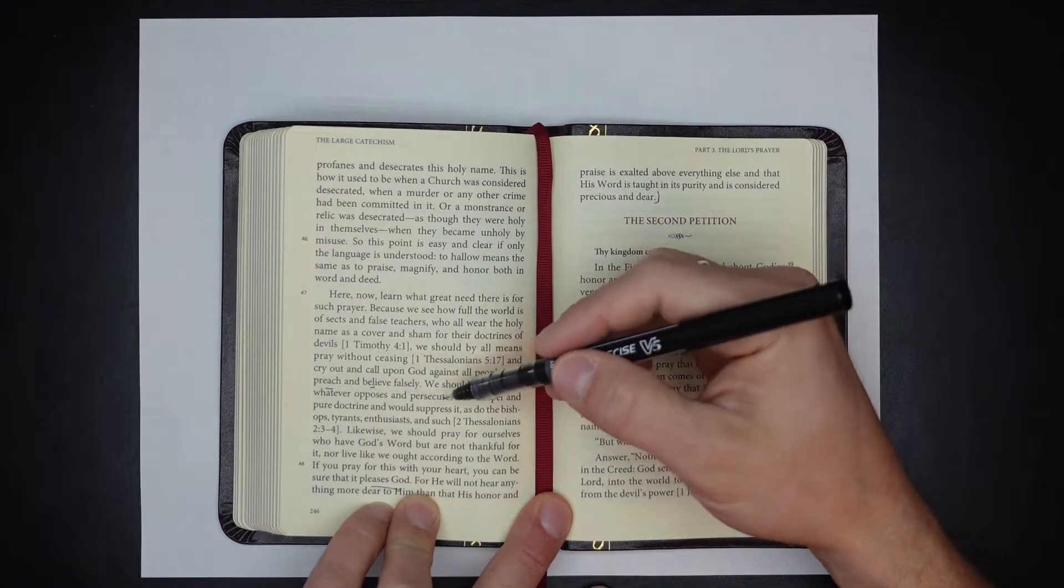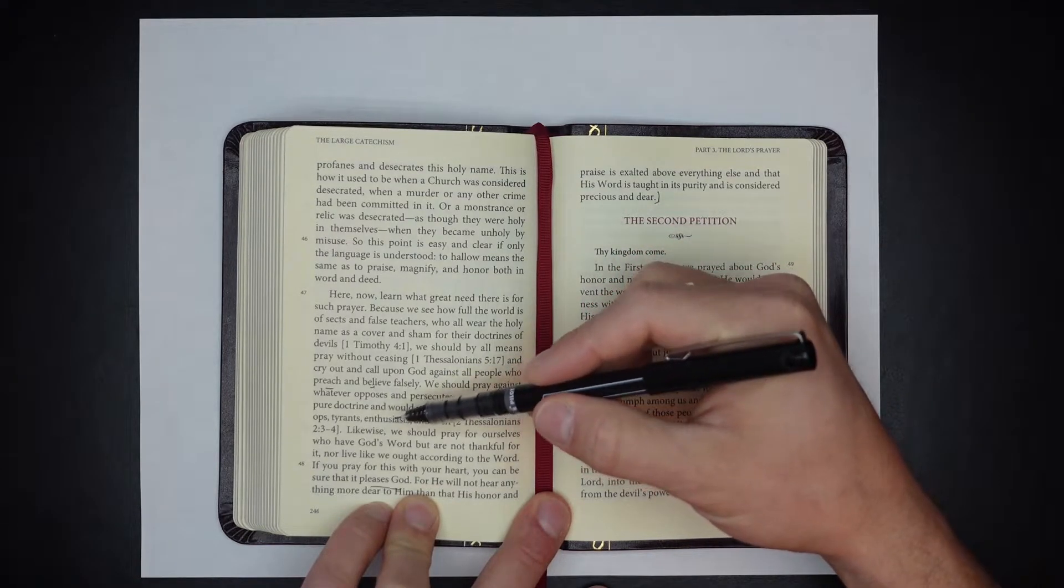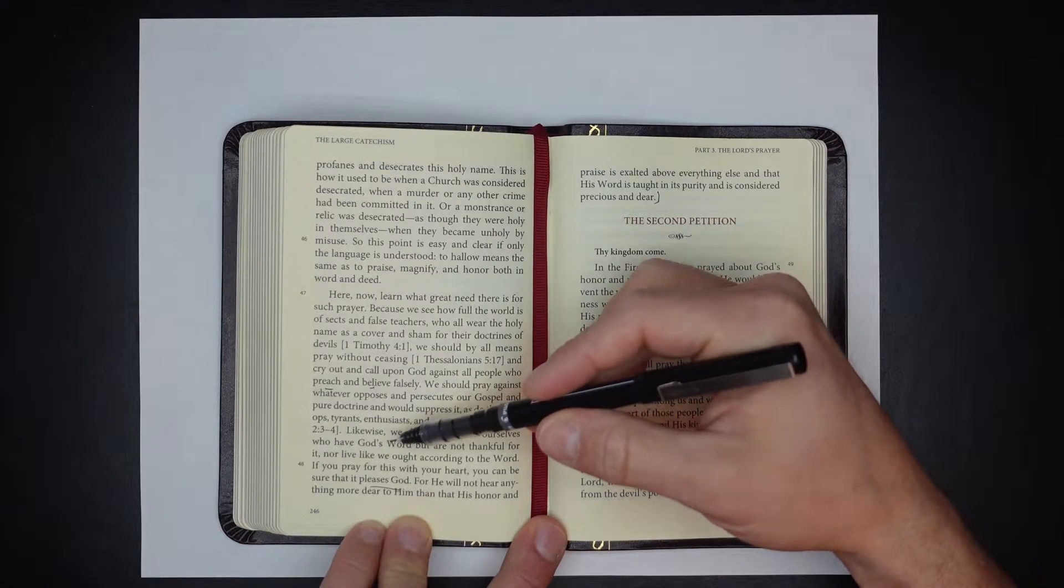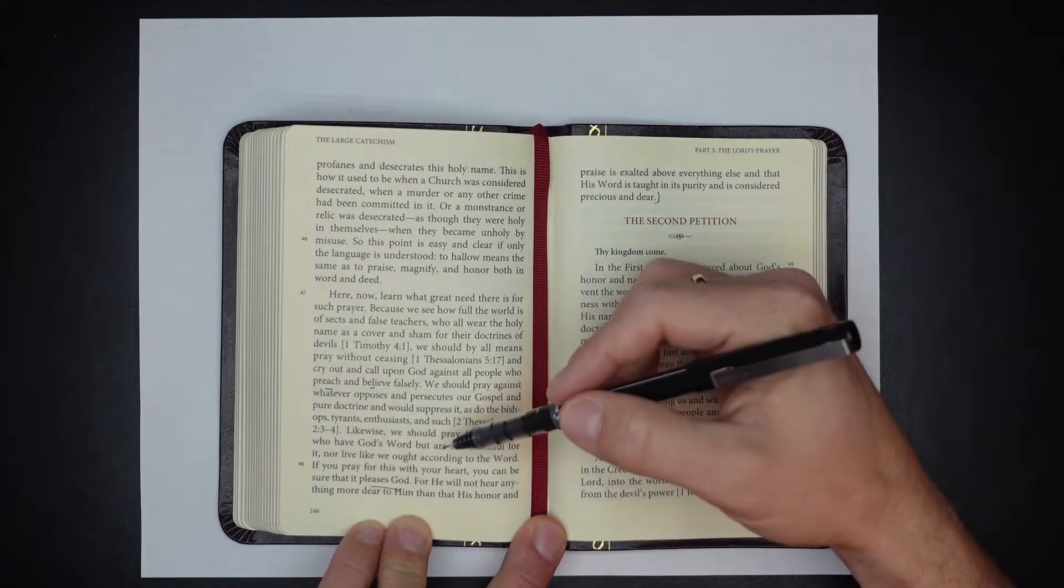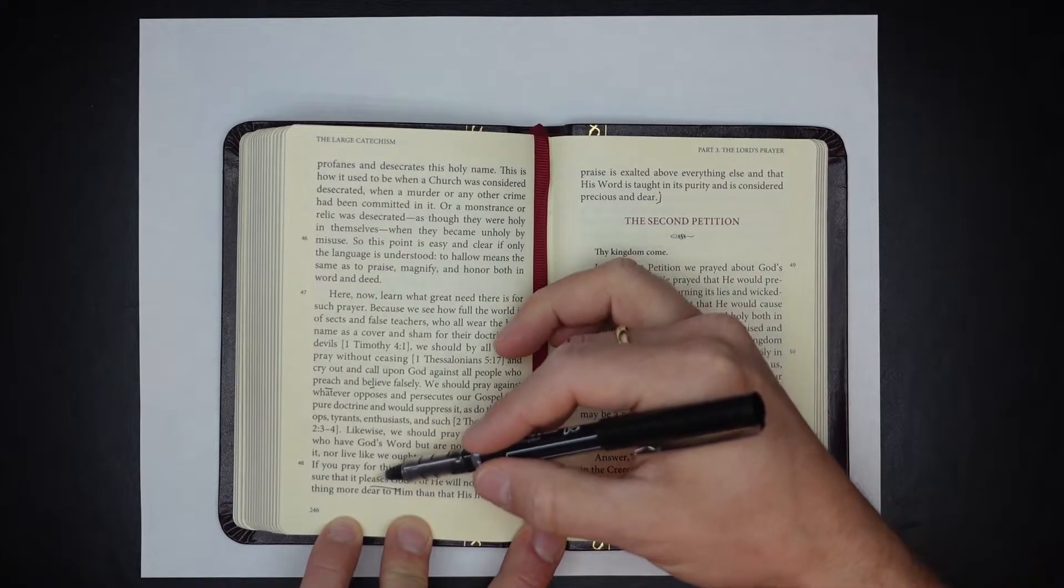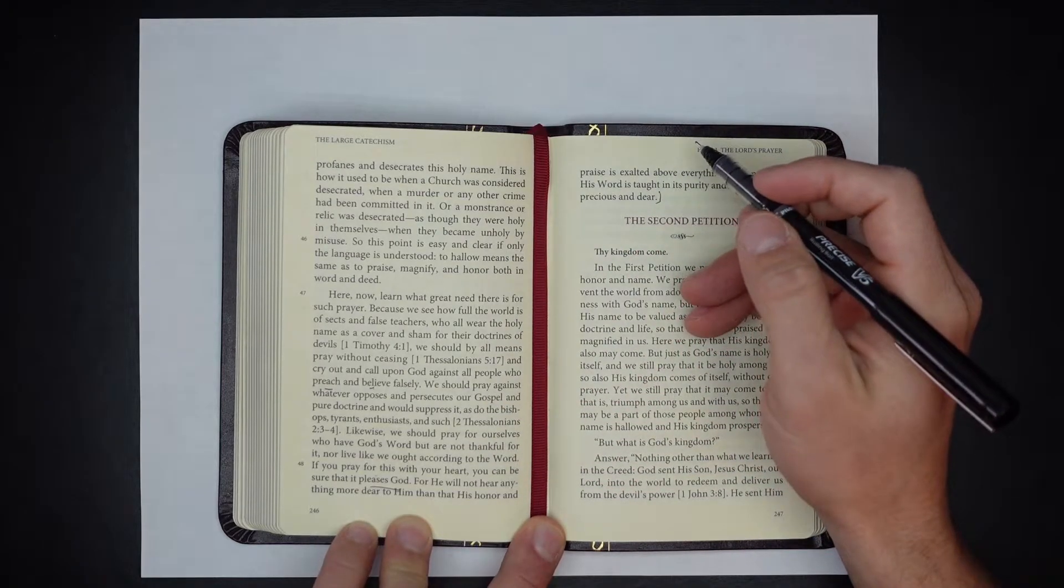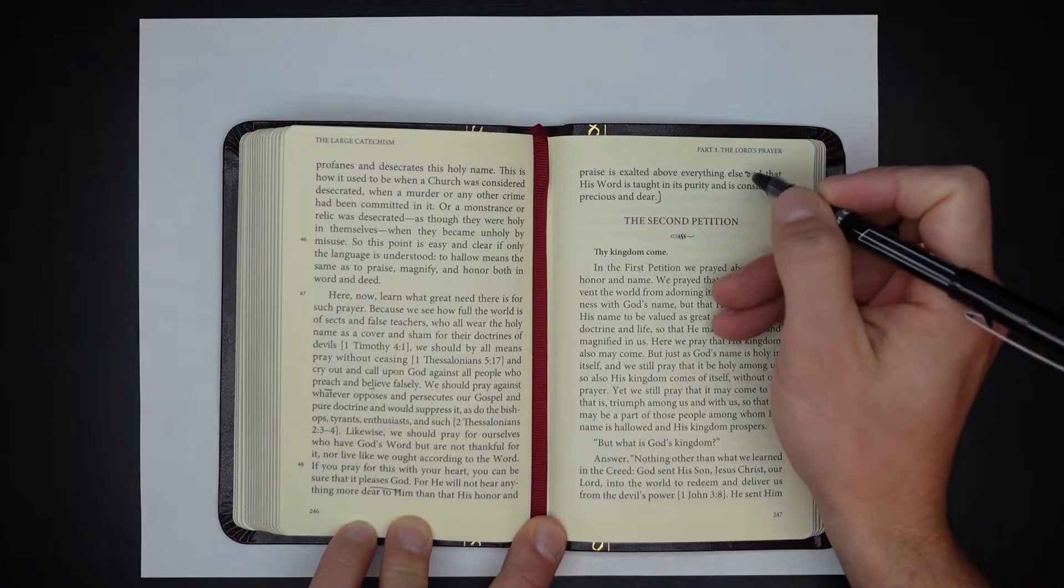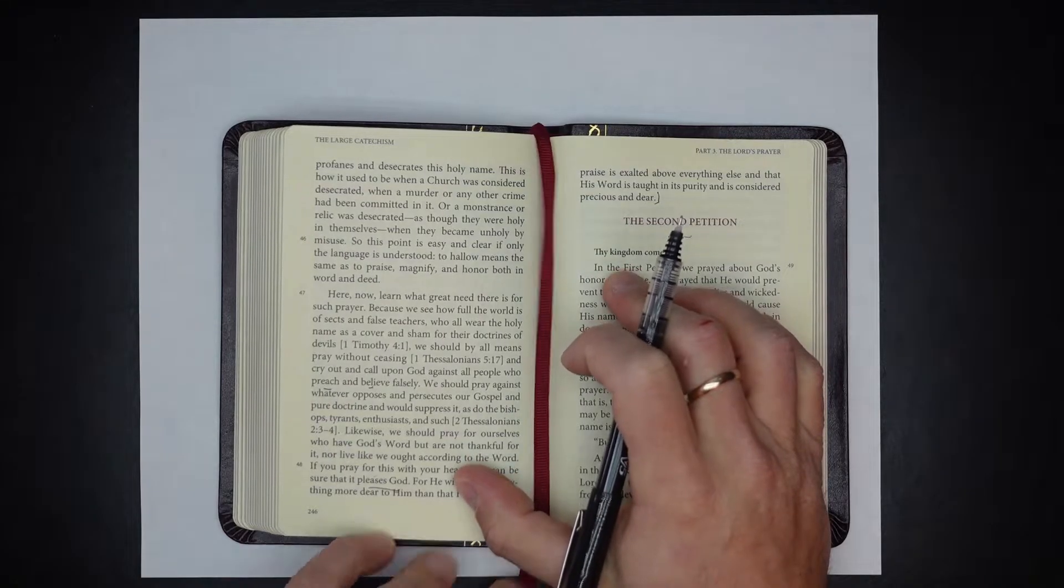We should pray against whatever opposes and persecutes our gospel and pure doctrine and would suppress it, as do the bishops, tyrants, enthusiasts, and such. Likewise, we should pray for ourselves who have God's word but are not thankful for it nor live like we ought to live according to the word. If you pray for this with your heart, you can be sure that it pleases God. For he will not hear anything more dear to him than that his honor, his praise is exalted above everything else, and that his word is taught in its purity and is considered precious and dear.